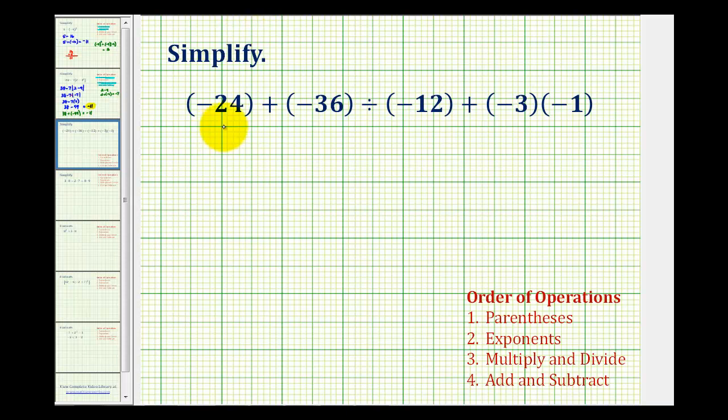We want to simplify or evaluate the following expression using the order of operations. Looking at the order of operations, there's nothing we can simplify inside any of these parentheses, so we skip step one. There are no exponents, so we skip step two.